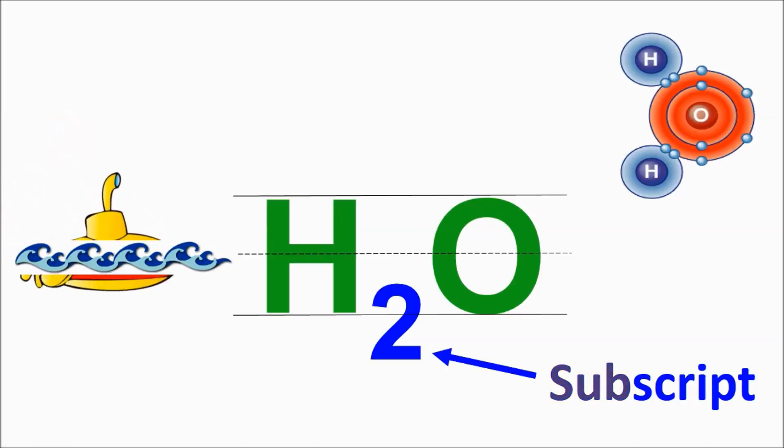In a chemical formula, numbers written below the line are called subscripts. Subscripts show the number of atoms of each element that make up the molecule. And they're always written behind the element symbol they're referring to.